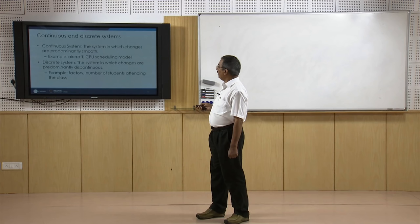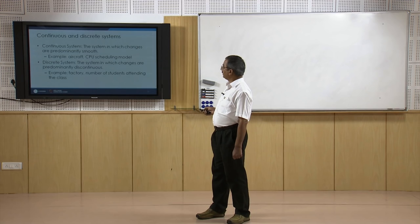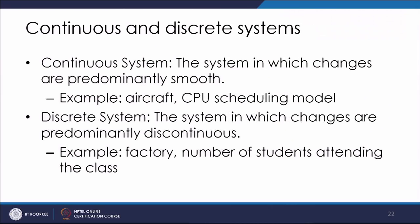A system can also be continuous or discrete. For example, an aircraft CPU scheduling model could be an example of a continuous system, while a discrete system is one where changes are predominantly discontinuous — such as the number of students attending classes.